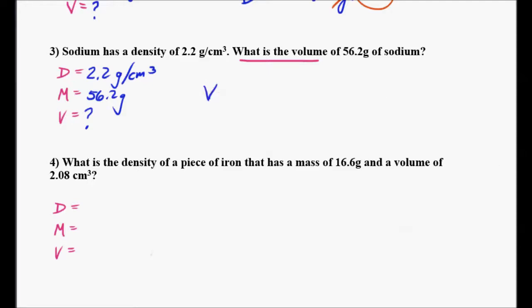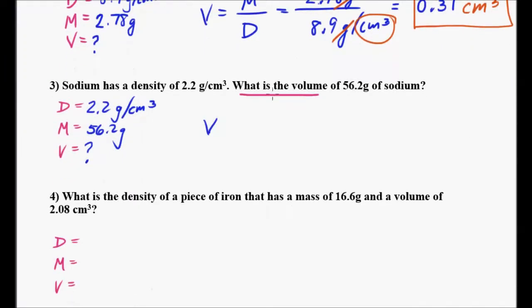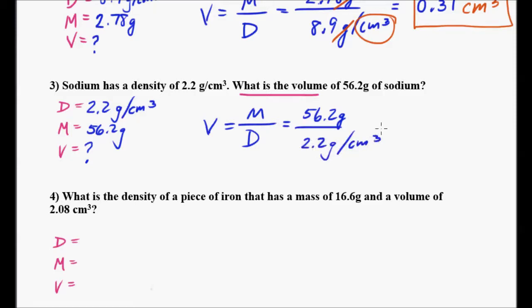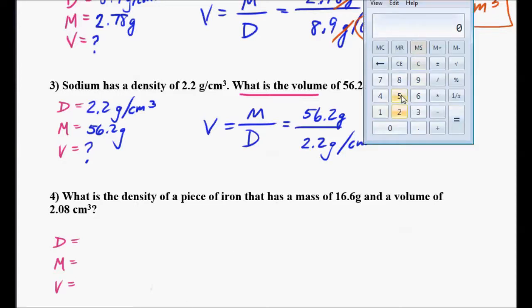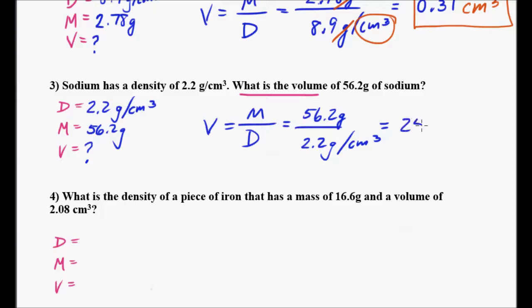I'm going to use the formula: volume equals mass over density. We have our mass of 56.2 grams divided by 2.2 grams per cubic centimeter, and then we do the math — 56.2 divided by 2.2 equals 25.54. Now look at the units: we're trying to find volume, and volume is going to be in cubic centimeters because the grams cancel out, leaving me with cubic centimeters as my answer.